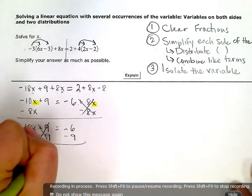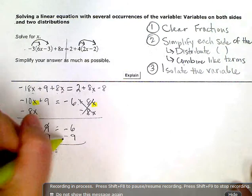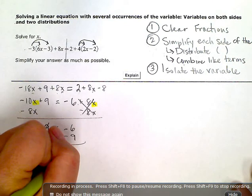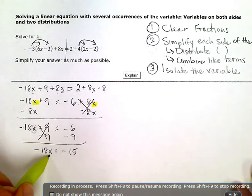I'm left with negative 18x equals negative six minus nine is negative fifteen. Now, very last, I want to undo or detach this number that's stuck directly to the x, the coefficient.